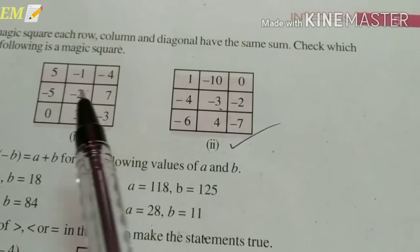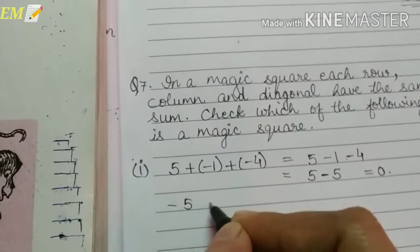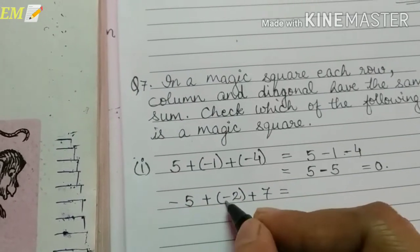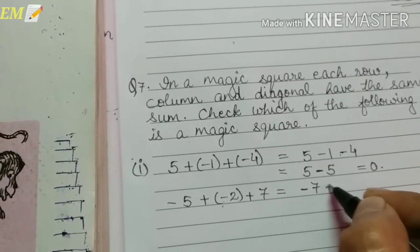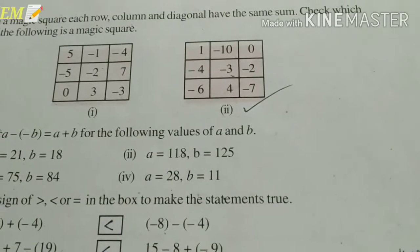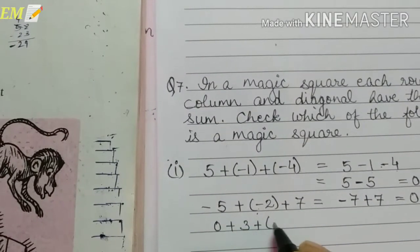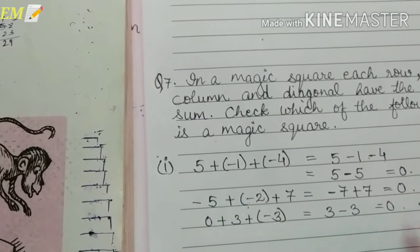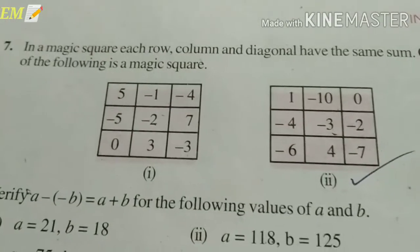Next row: (-5) plus (-2) plus 7. Minus and minus gives plus, so 5 plus 2 is 7, minus 7 plus 7, again we get 0. Last row: 0 plus 3 plus (-3), that is 3 minus 3, equal to 0. So all rows have the same sum.